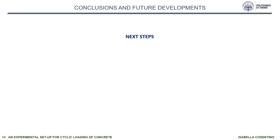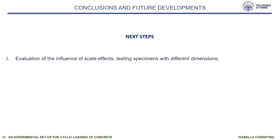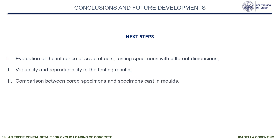The experimental campaign is ongoing. One next step of our research is the evaluation of the influence of scale effects, testing specimens with different dimensions. We will take into account variability and reproducibility of testing results by employing a minimum number of five specimens per loading condition. Another next step is the comparison between cored specimens and specimens cast in molds, to evaluate the disturbing effects of coring on the measured resistance.